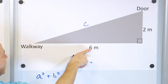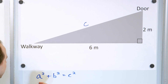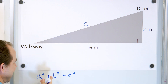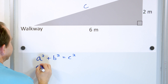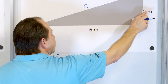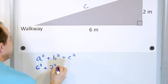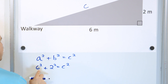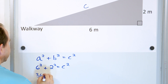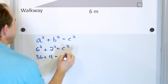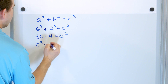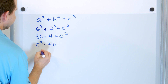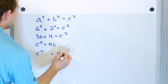From the Pythagorean theorem: a² + b² = c². Let's plug in what we know. One side is 6, so that's 6 squared. The other side is 2, so that's 2 squared, equal to c². So we have 6 × 6 = 36, and 2 × 2 = 4. Flipping it around with c on the left: 36 + 4 = 40. So c² = 40.